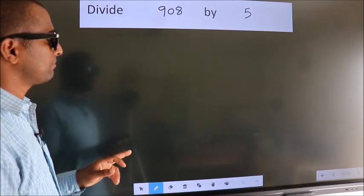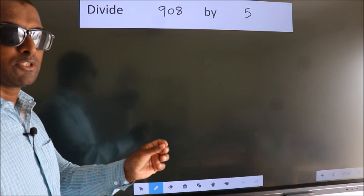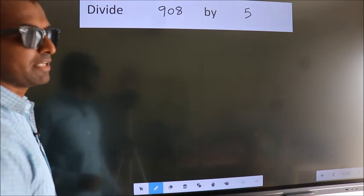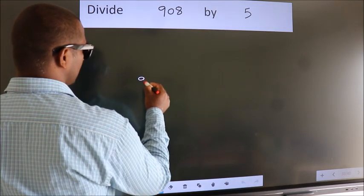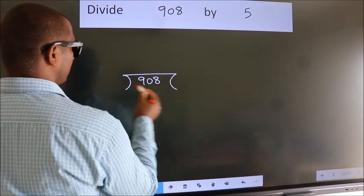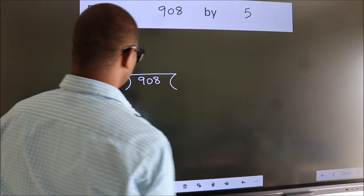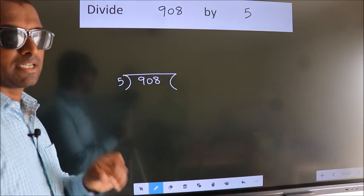Divide 908 by 5. To do this division, we should frame it in this way. 908 here, 5 here. This is your step 1.